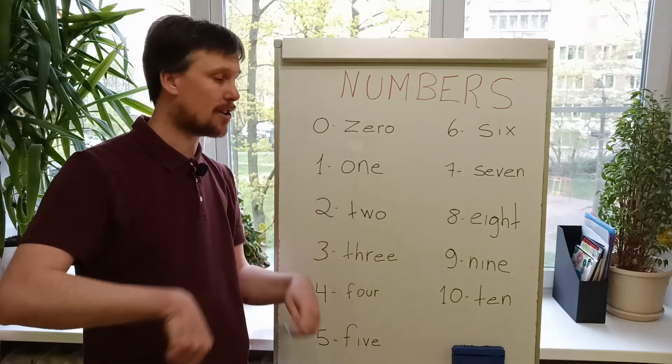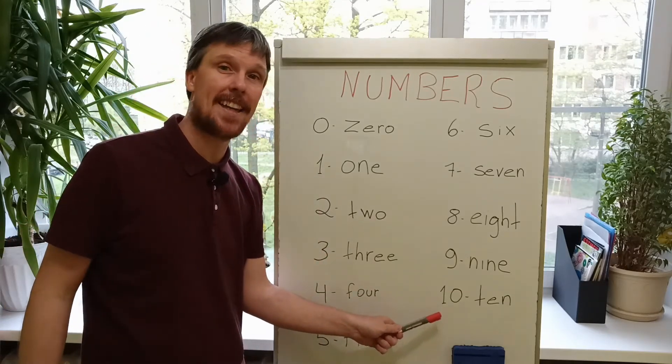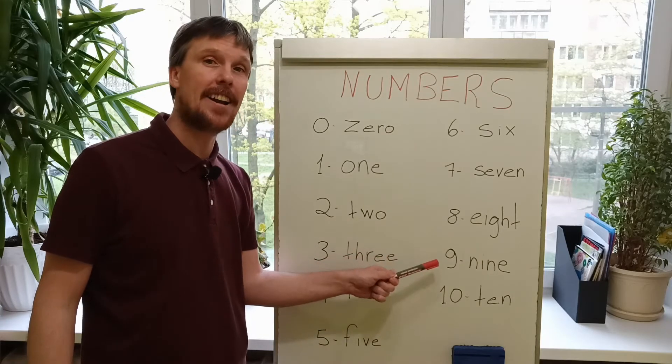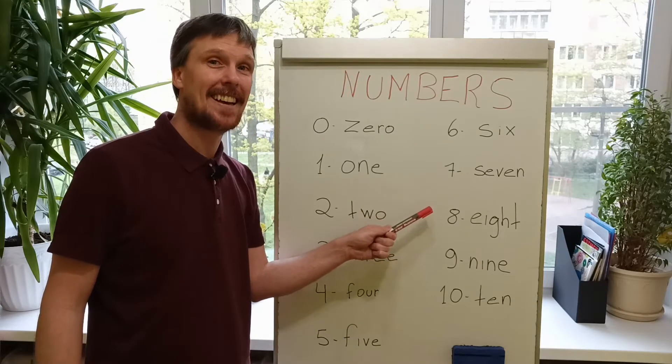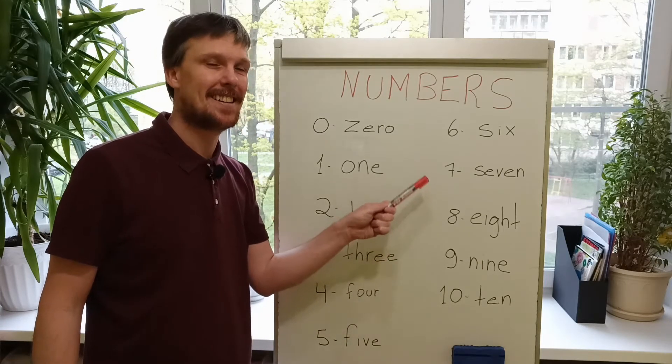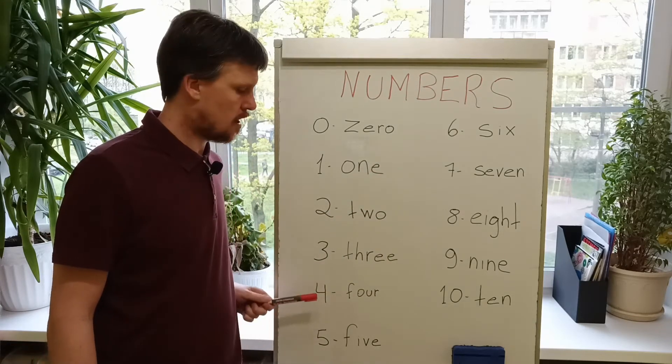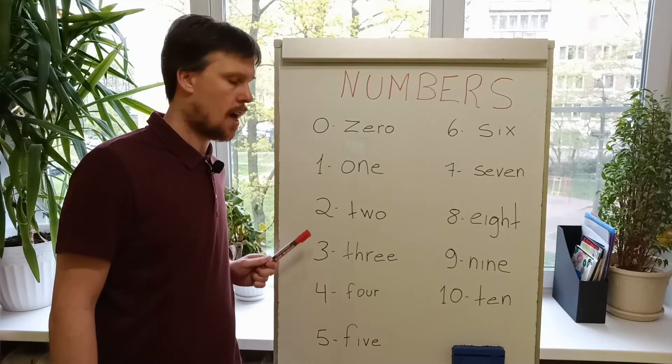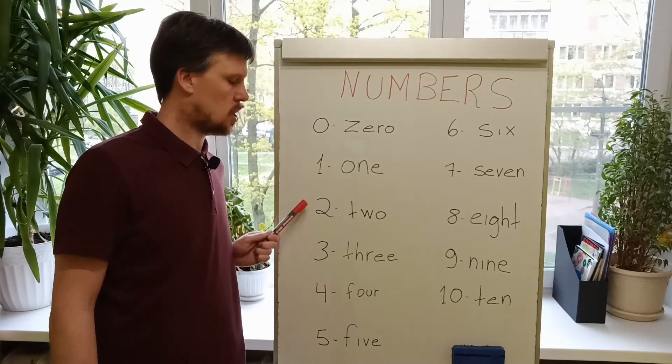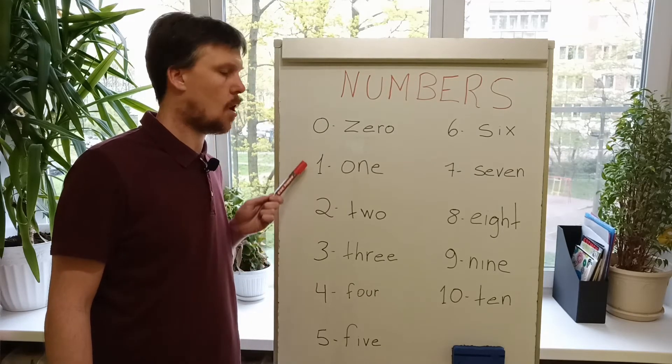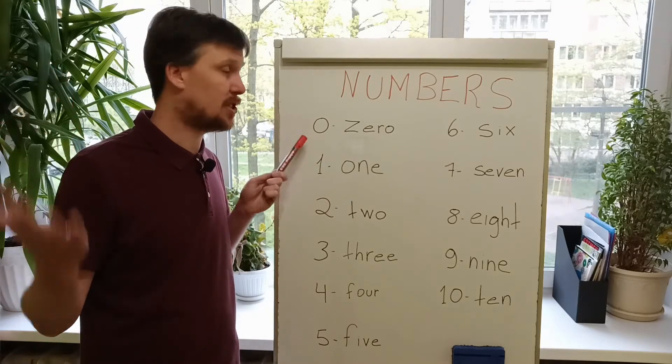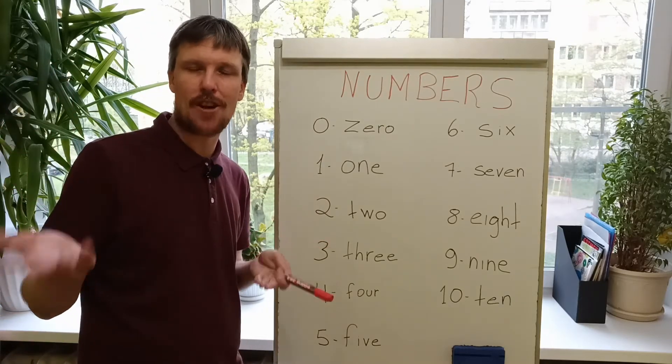Again, backwards. Repeat. Ten. Nine. Eight. Seven. Six. Five. Four. Three. Two. One. Zero. Perfect! Very good!